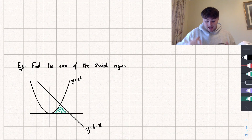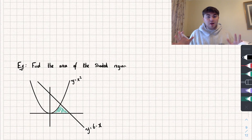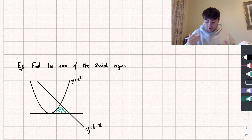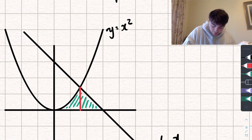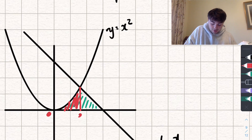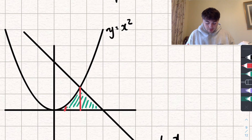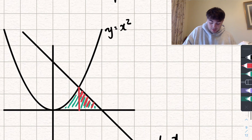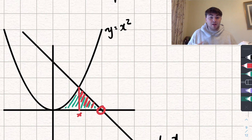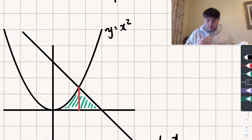For the final example, we need to find the area of this shaded region. This is trickier for two reasons: we haven't been given x-values to integrate between, so we need to find them; and we're finding the area bounded between a curve and a straight line. We'll split it into two parts — the area under the curve y equals x squared from 0 to the intersection point, and the area under the straight line y equals 6 minus x from the intersection point to where it crosses the x-axis.